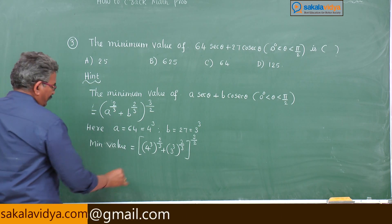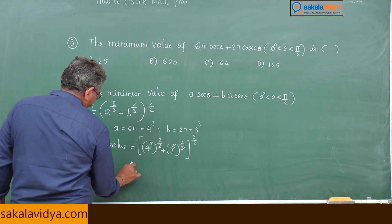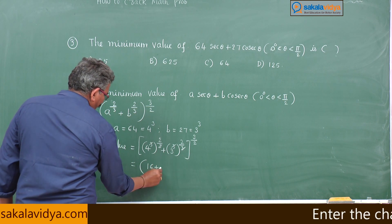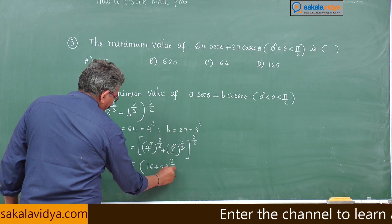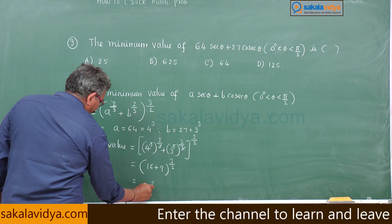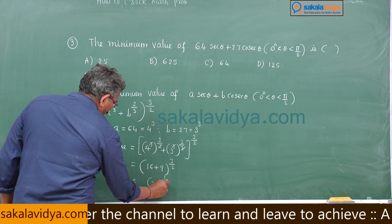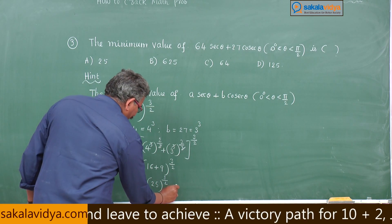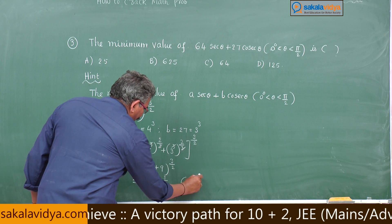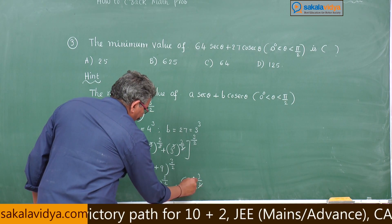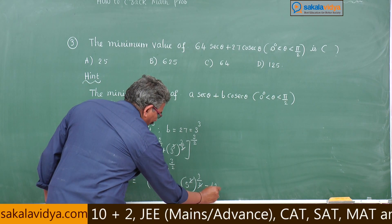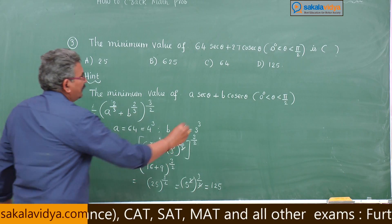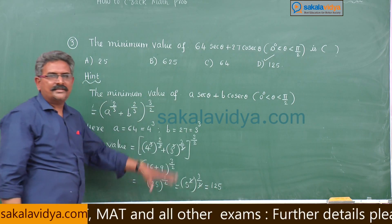Now 3 gets cancelled, 4 square is 16, 3 square is 9, this is 3 by 2, this is 25 to the power of 3 by 2. We know 25 is a perfect square that can be written 5 square. So 5 square whole to the power of 3 by 2, 2 gets cancelled, 5 cube is 125.